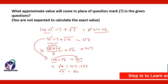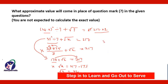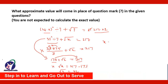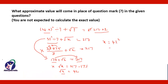We have to find the value of x, so squaring both sides you will get x is equal to 42 squared, and 42 squared is equal to 1764. So the approximate value of the question mark will be 1764.